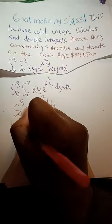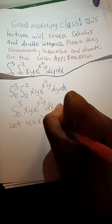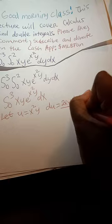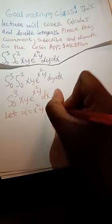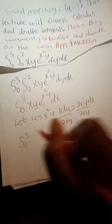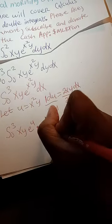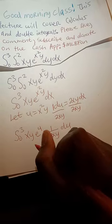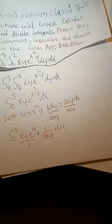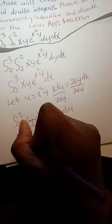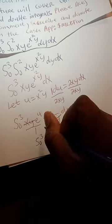Then we want to say let u equal x squared y. du will equal 2xy dx. Then divide both sides by 2xy, and place a 1 in front of that du. So it will now read the integral from 0 to 3 of x, y, e to the x squared y, and place x, y times e to the u over 1. We notice that the x, y will cancel out in the numerator and denominator.